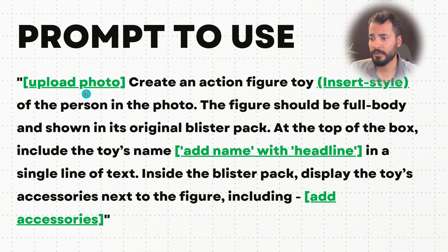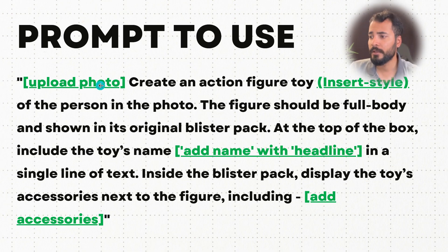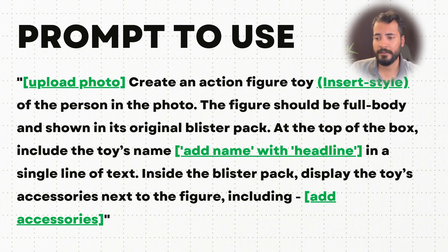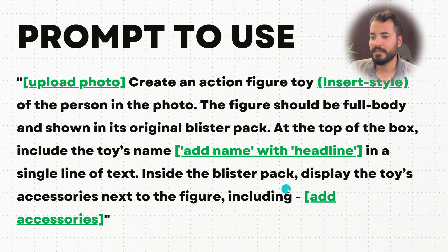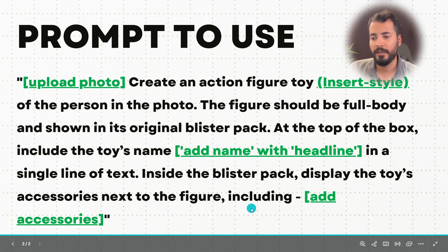The prompt you'll use adds more detail to a base prompt I took from another creator on X. You upload your photo, then write: 'Create an action figure toy — insert the style — of the person in the photo. The figure should be full body and shown in its original blister pack. At the top of the box include the toy's name in a single line of text inside the blister pack. Display the toy's accessories next to the figure.'